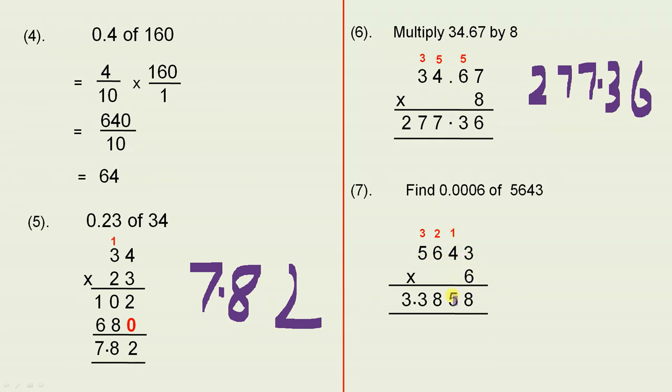6 fours are 24, plus 1 is 25. 6 sixes are 36, plus 2 is 38. And 6 fives are 30, plus 3 is 33. So 33858.